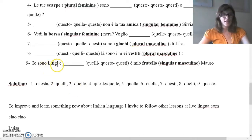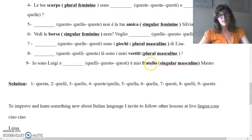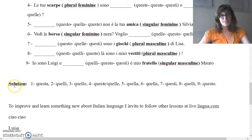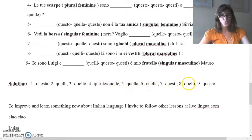Io sono Luigi e — quelli, questo, questi — è mio fratello, Mauro. Fratello means brother, singular masculine. Now here you have the solution: questa, quelli, quello, questi e quelle, quella, quella, questi, quelli, questo.